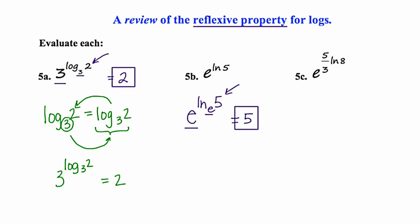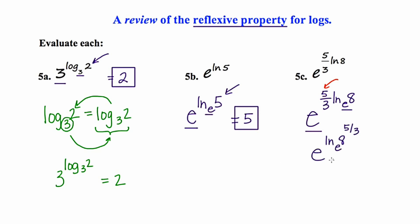5c says to evaluate e to the five thirds ln eight. I'll rewrite showing the implied base: e to the five thirds of the ln of eight base e. I've got a pairing between the two bases, except I'm not allowed to have constants out in front when using this rule. So I'll use the power rule for logs to allow that five thirds to become the power of eight. After rewriting, our base of e matches up, so the answer is eight to the five thirds — just the argument itself.